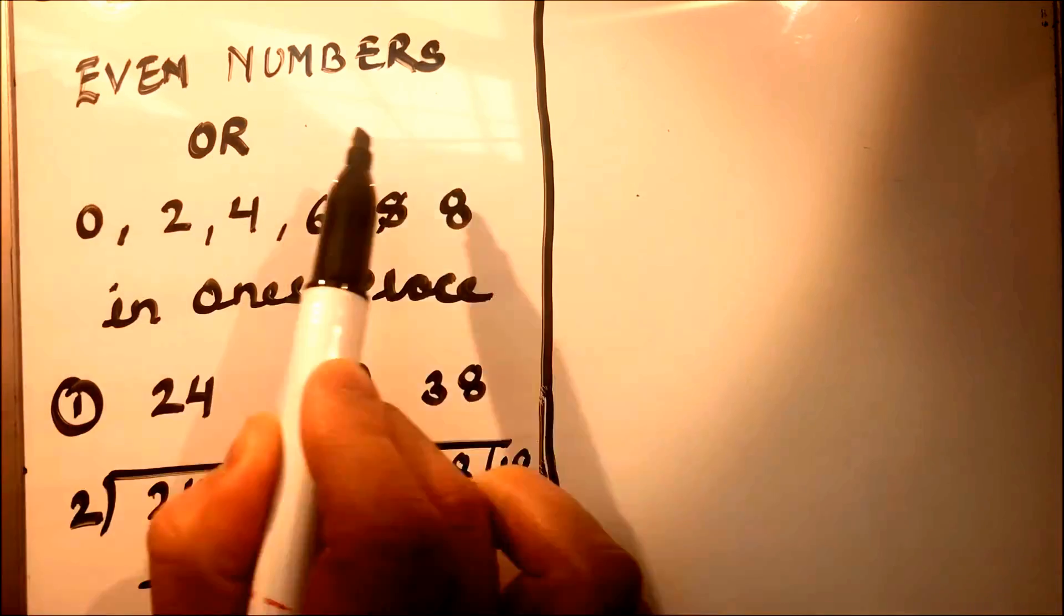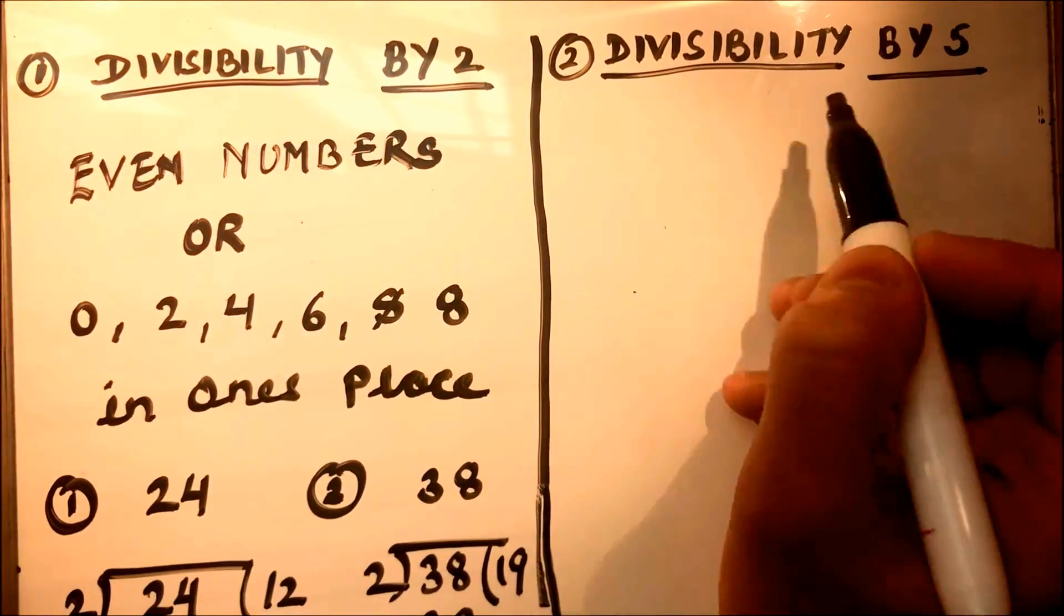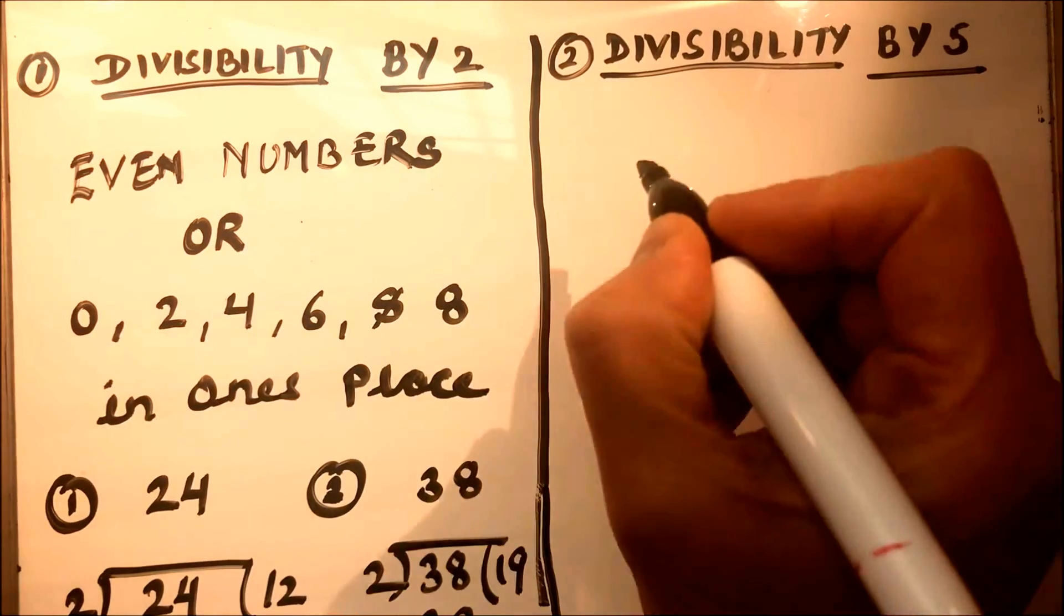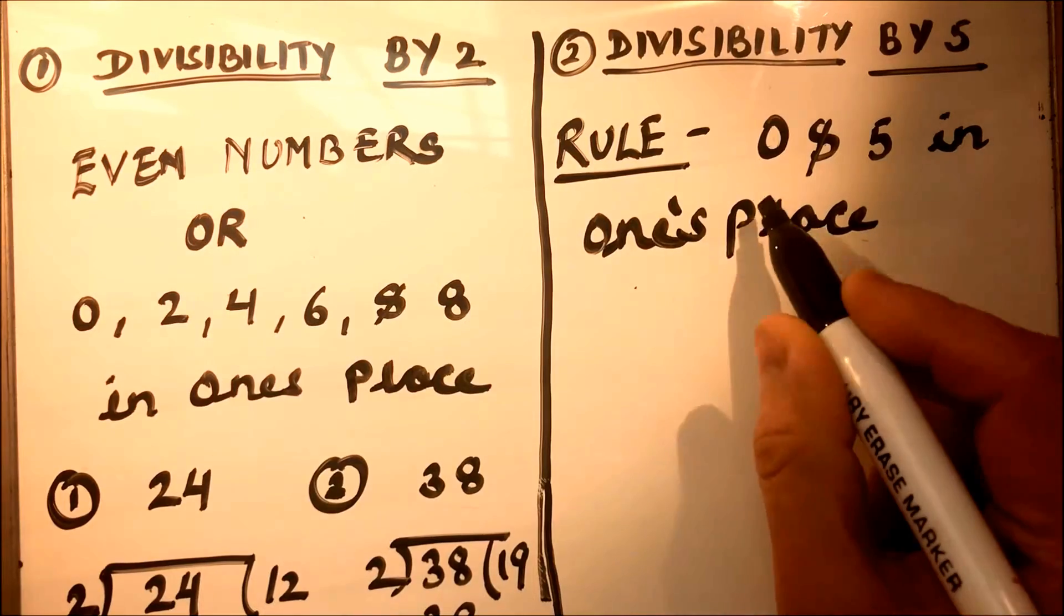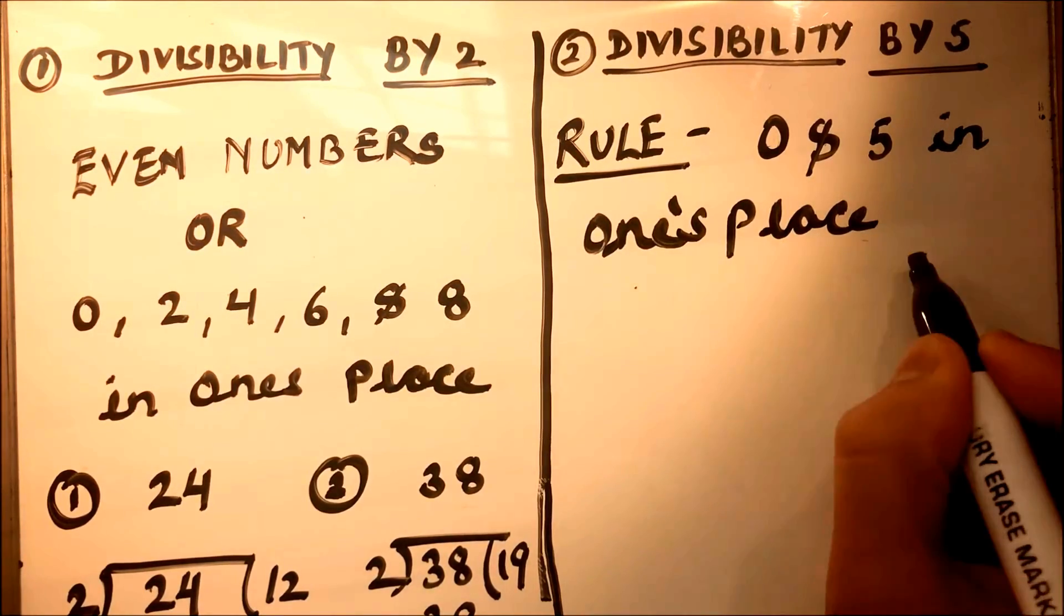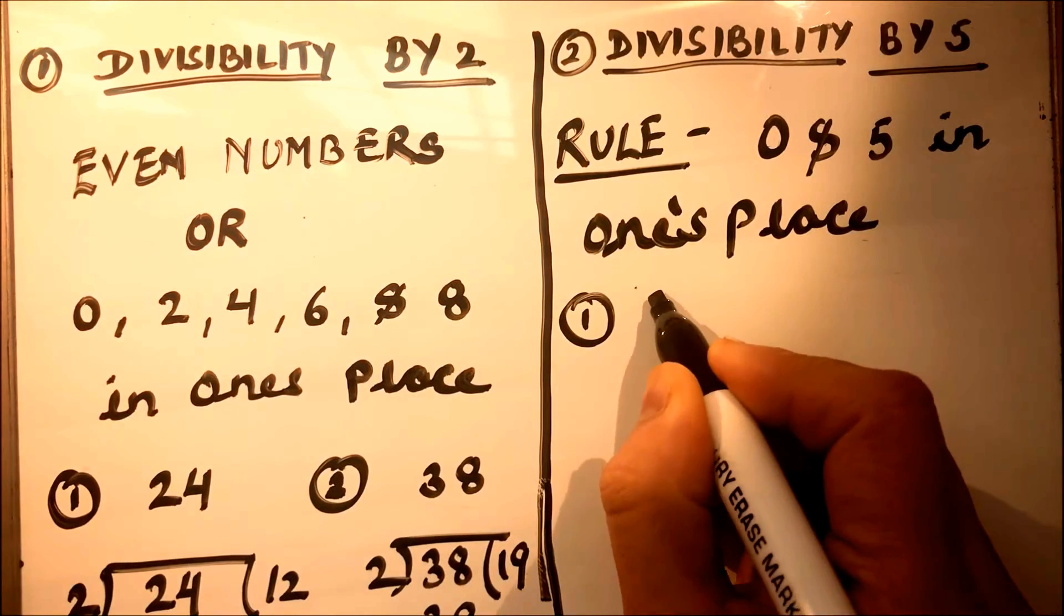All even numbers are divisible by 2. Now let's check the divisibility of numbers by 5. The rule for this is all numbers having 0 and 5 in ones place are divisible by 5. Let's take example.